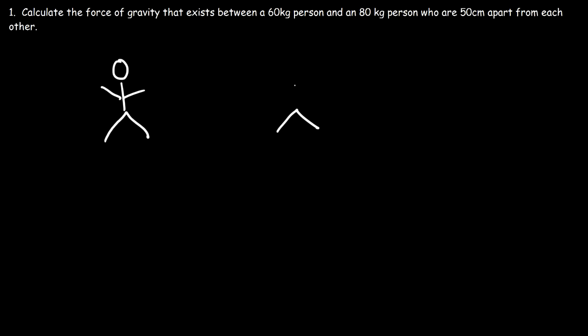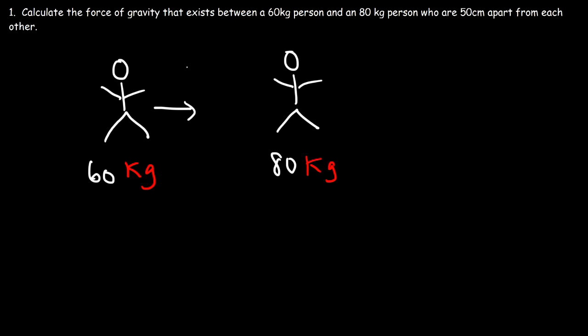So let's say this is the 60 kilogram person and here is the 80 kilogram person. How can we calculate the gravitational force between the two? Now gravity is a force of attraction — gravity brings matter together. So gravity is going to pull the 60 kilogram person towards the 80 kilogram person, and the 60 kilogram person exerts a force on the 80 kilogram person. These two forces are equal in magnitude but opposite in direction, and this represents the force of gravity.